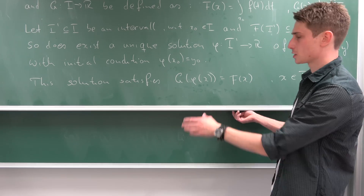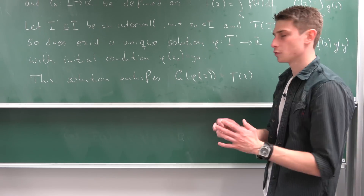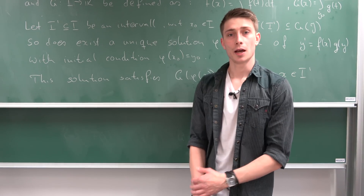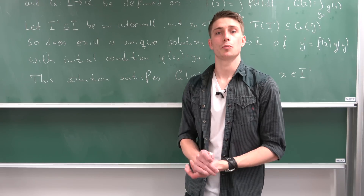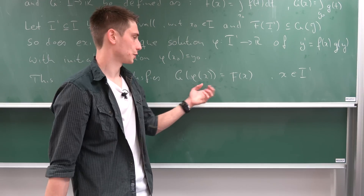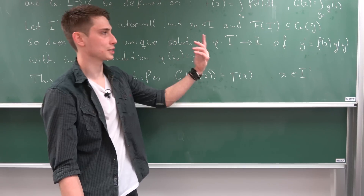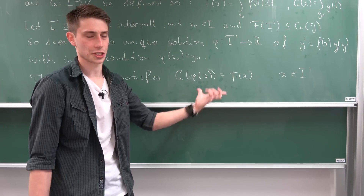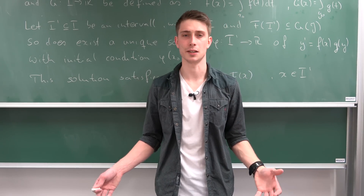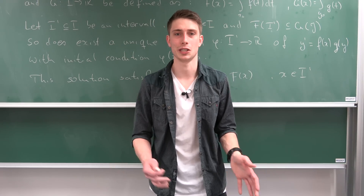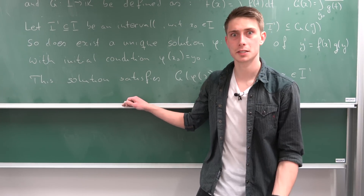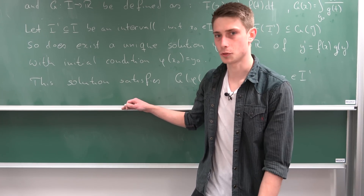This solution also satisfies the connection that capital G composed with phi is going to be equal to capital F. That's all the theorem really states. Now we want to prove this. There are a few things we need to prove: first, we want to show that all solutions satisfy this relationship; next, we want to show uniqueness; and existence in the end. Let's go ahead and prove the first thing.